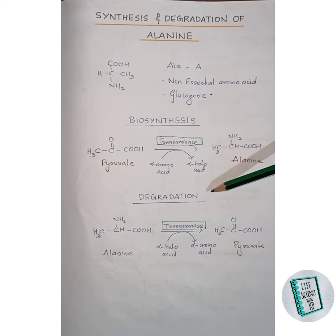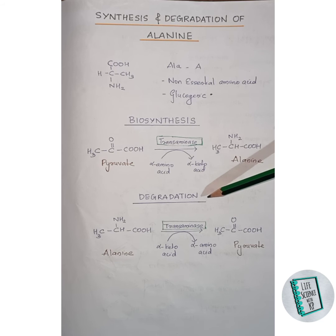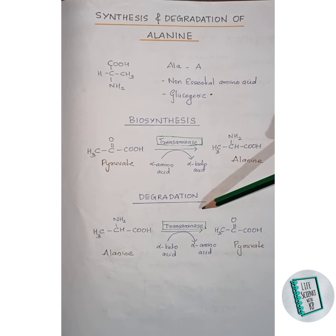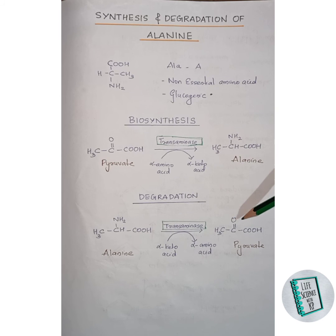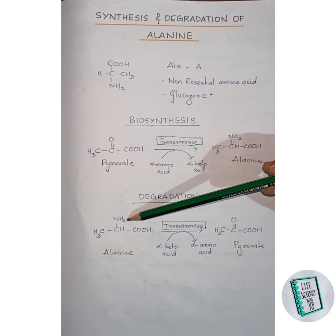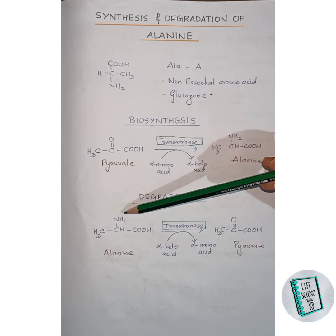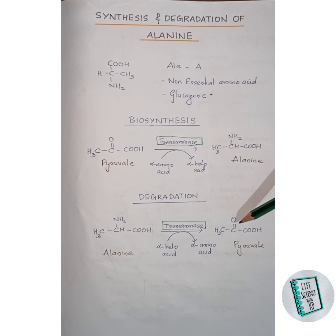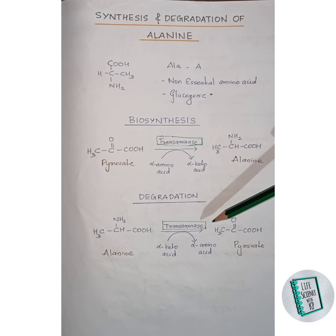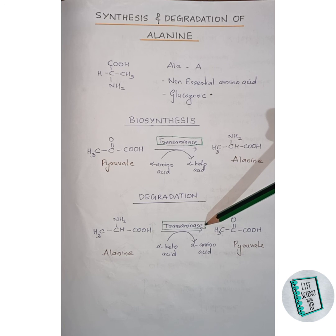Now let us move on to the degradation of alanine. Alanine degradation is a transamination reaction where alanine gets converted to pyruvate. The amino group of alanine gets replaced by a keto group to form pyruvate. This reaction takes place in the presence of transaminase enzyme.